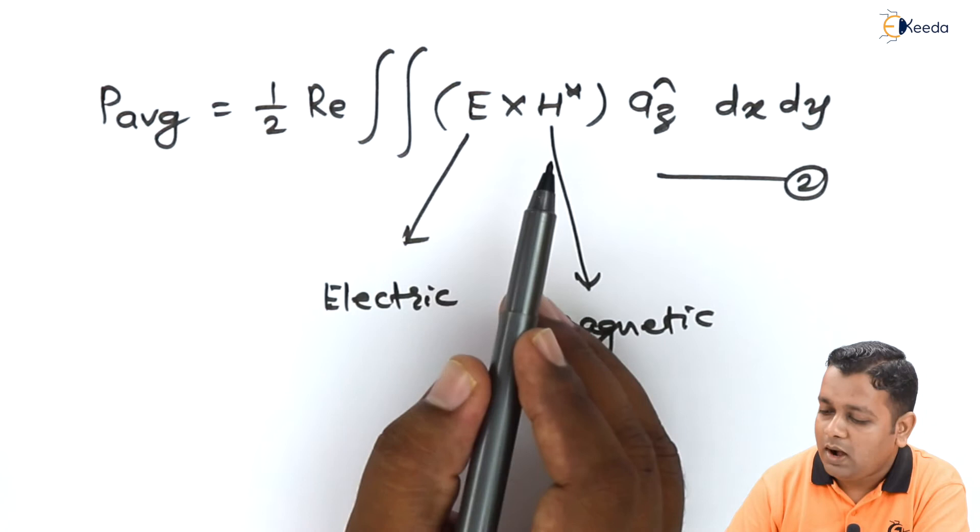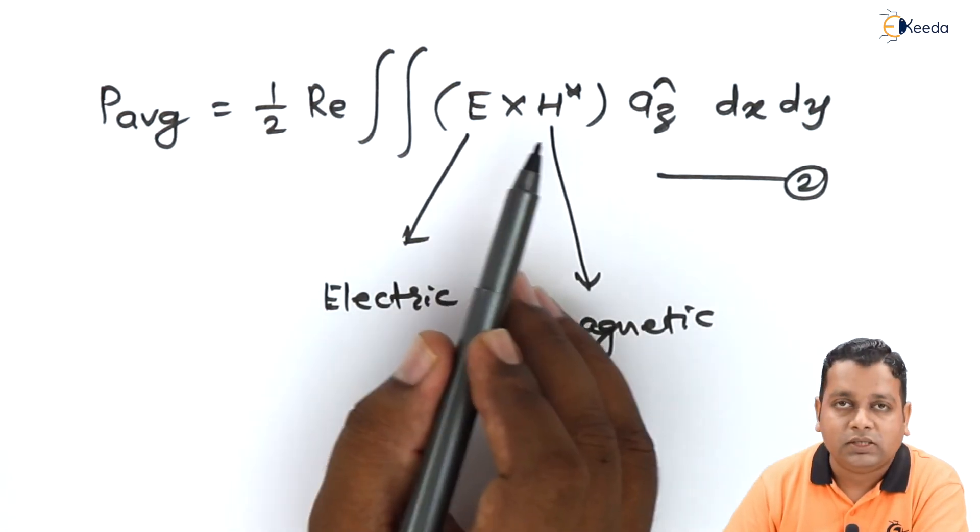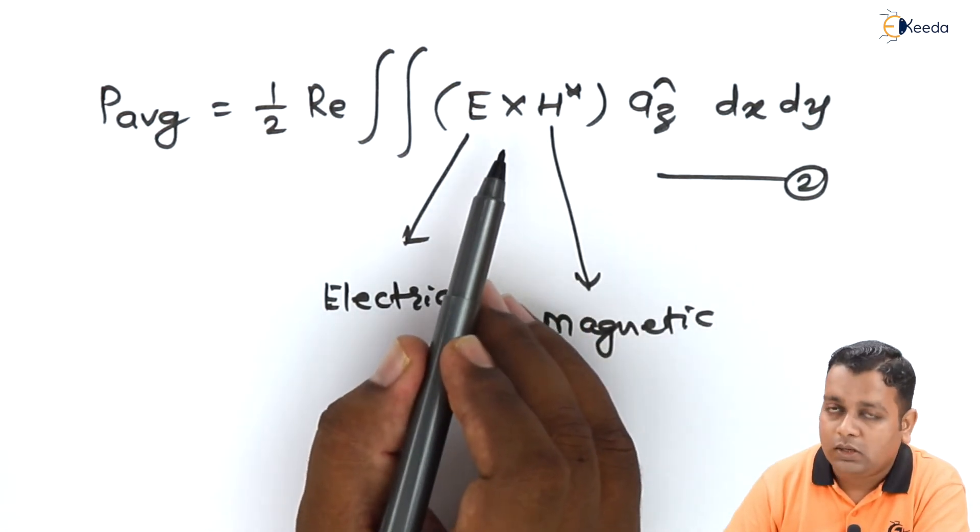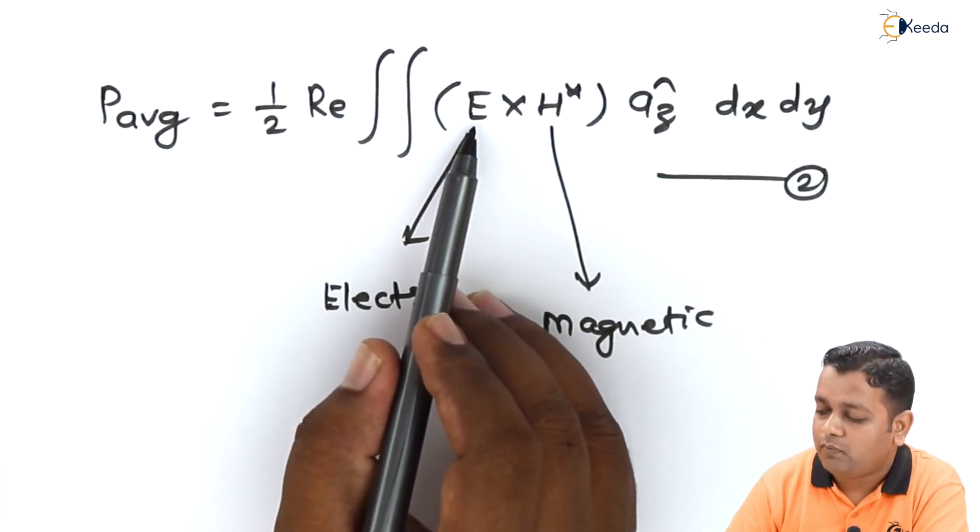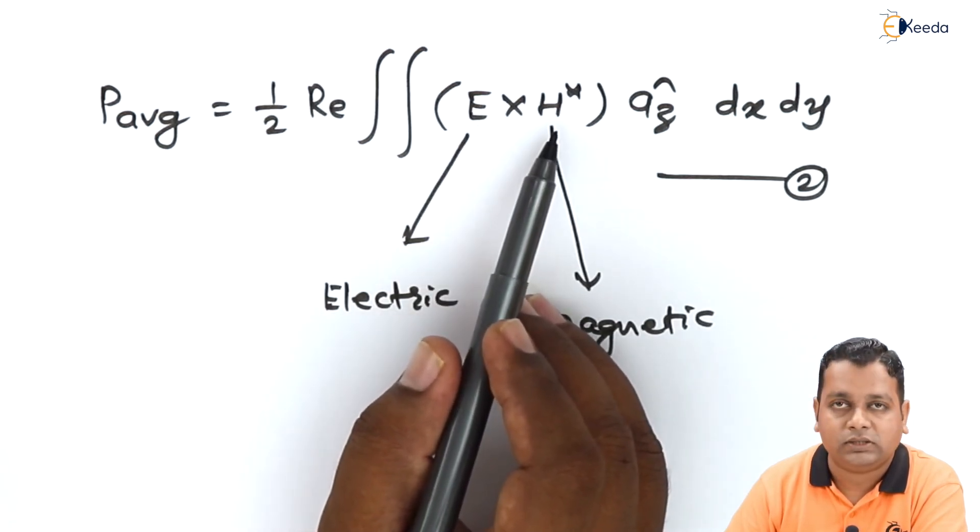Where we have the cross product of the directions of electric field and that of the magnetic field, the resultant direction is normal, perpendicular to the directions of E and H.